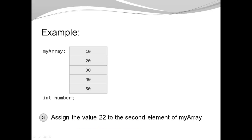Third challenge: assign the value 22 to the second element of myArray. At this point I'm no longer reading — I am modifying the array element. So my array access expression has to be on the left side of the assignment. Because we start at zero, the index of the second element is 1. So I have myArray[1] on the left side and assign it the new value 22.